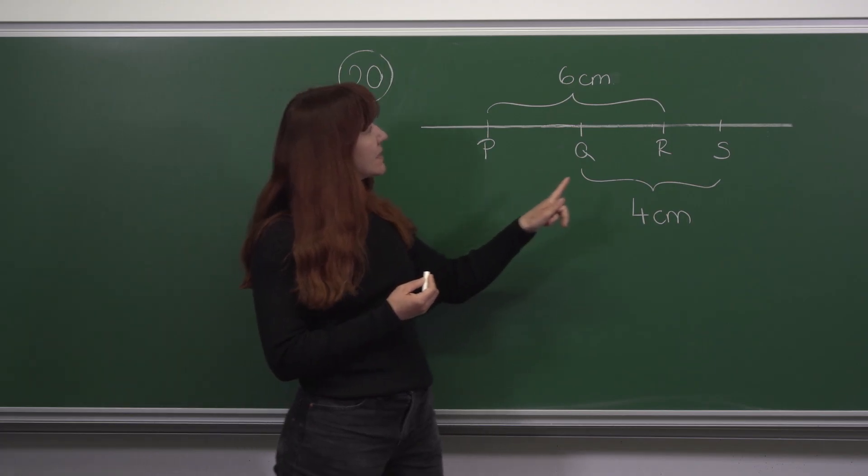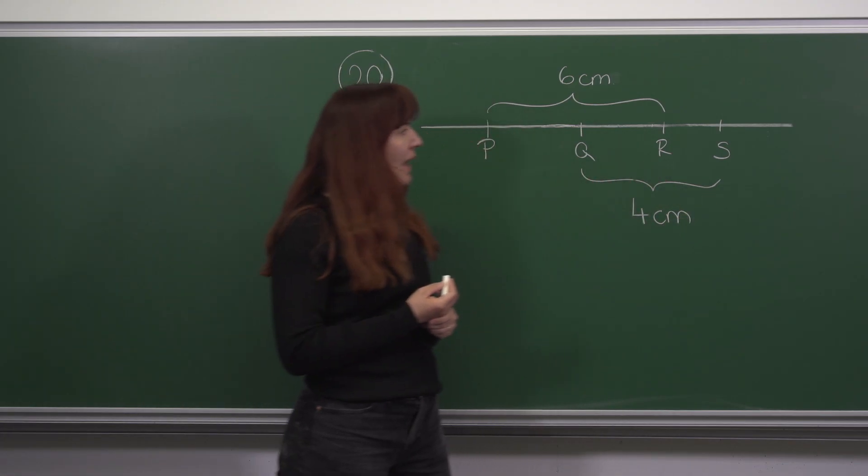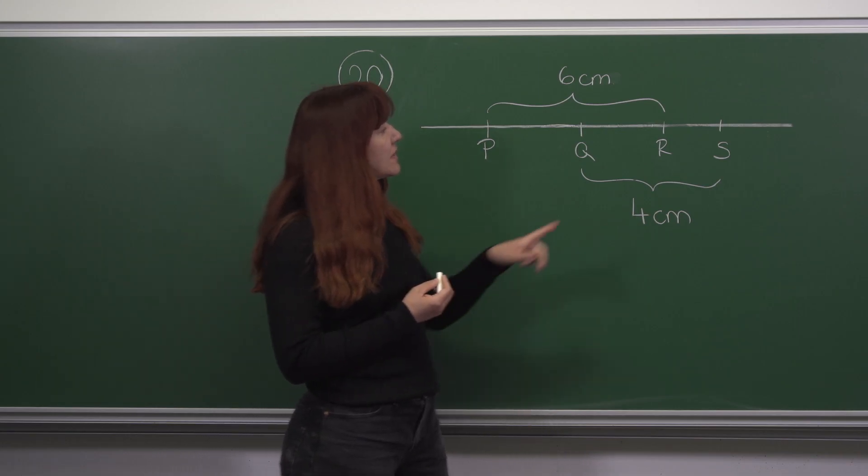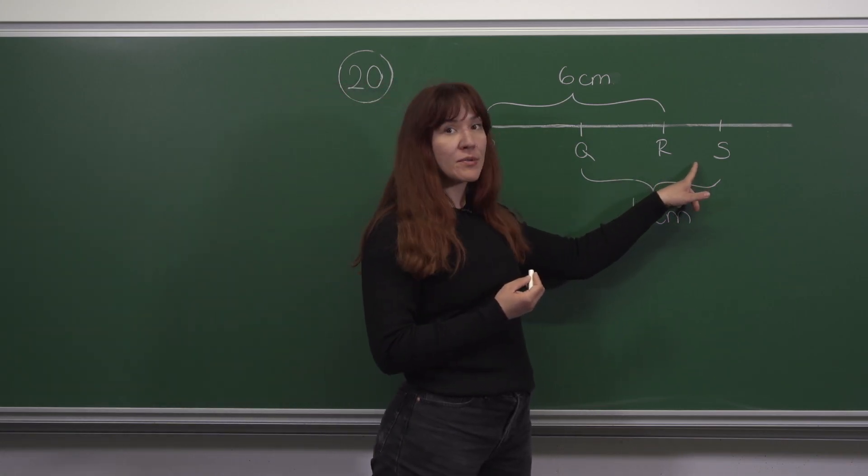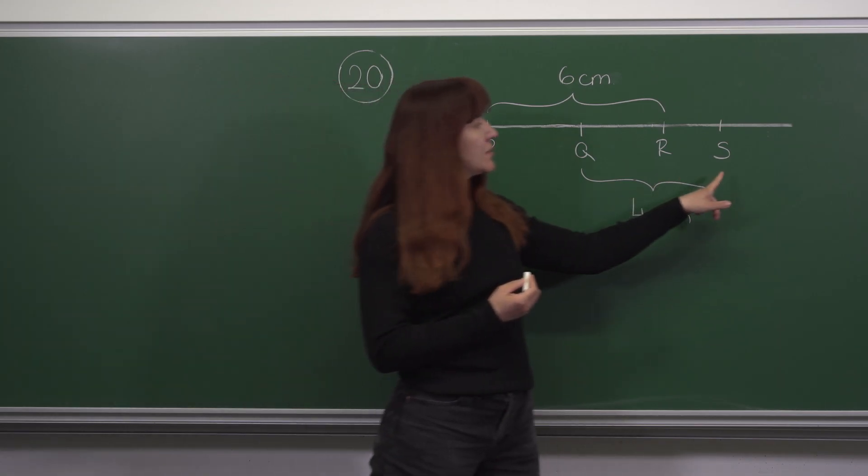We are given that P is six centimeters away from R and Q is four centimeters away from S. We are also told that R is one centimeter nearer to S than it is to Q. Our task is to find the distance from P to S.